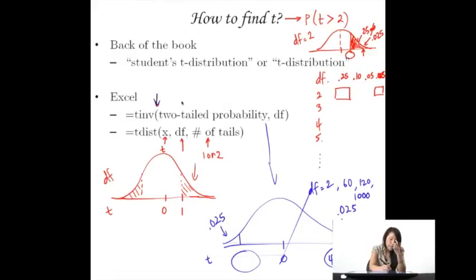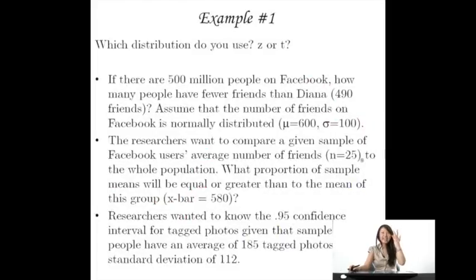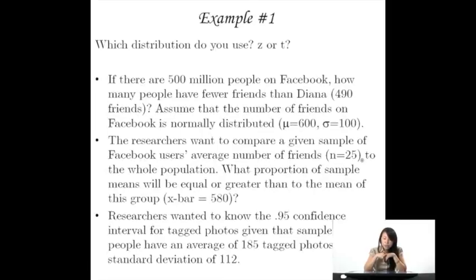So those are two ways you can find the t as well as the probability associated with it. But you always have to remember the degrees of freedom, and whether you want two-tailed or one-tailed probability. Now let's do some examples. In each of these situations, which distribution do you use — the z or the t? If there are 500 million people on Facebook, how many have fewer friends than Diana, who has 490 friends? Assume the number of friends is normally distributed. Here they give you sigma, so you can use the z-distribution.